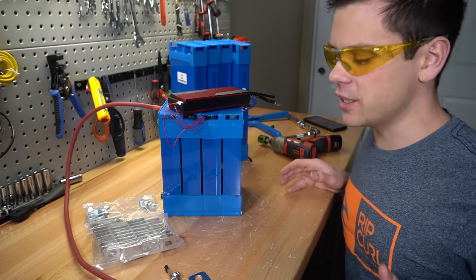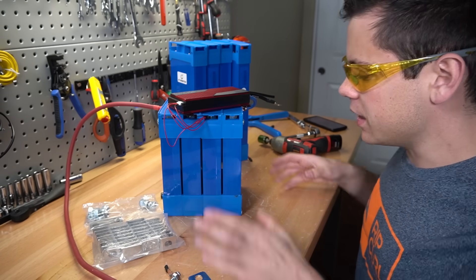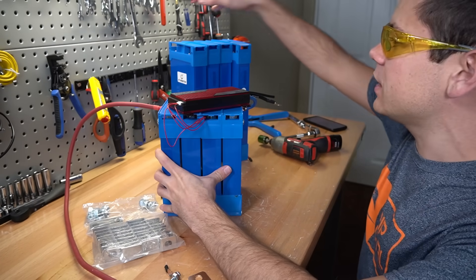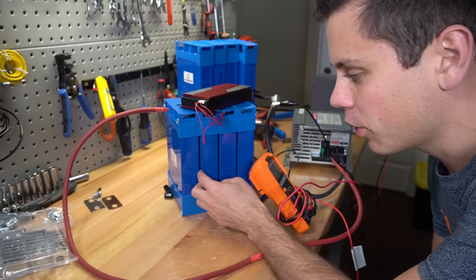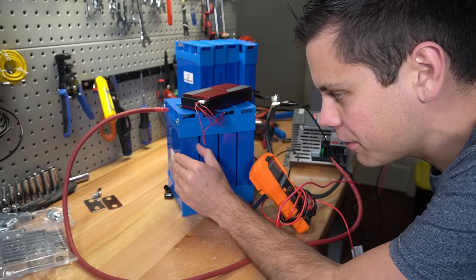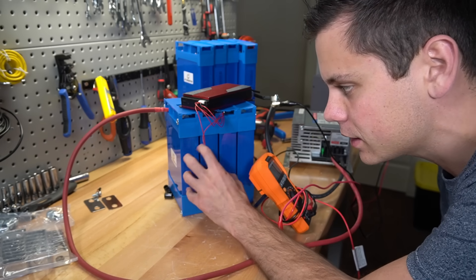Now we're going to add a charger and do a quick capacity test. These are 60 amp hour cells and these are 100 amp hour cells. Right now we are speed charging at 40 amps and it's so nice to have air between the cells because these are getting hot.